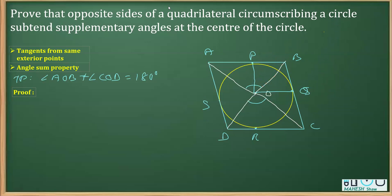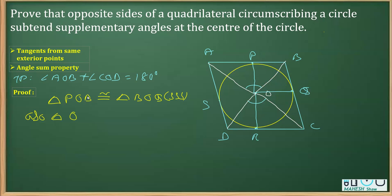In the proof part, write: triangle BOP is congruent to triangle BOQ by SSS. Also, triangle ROC is congruent to triangle QOC by SSS. From these congruent triangles, we can label the angles: angle 1 equals angle 2, and angle 3 equals angle 4, by CPCT.